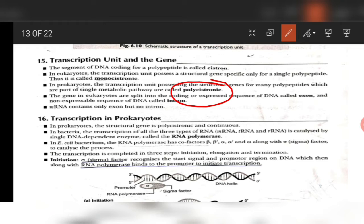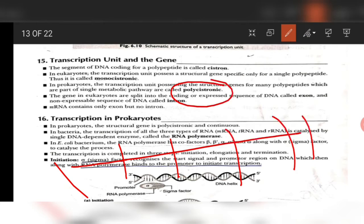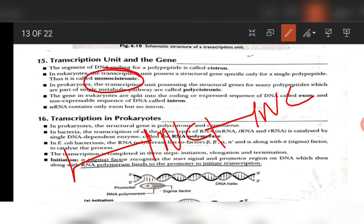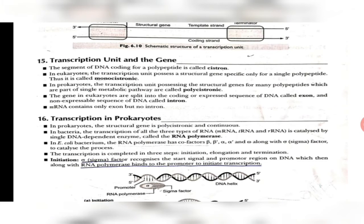In polycistronic DNA, many polypeptides can be synthesized at one time — from one stretch of mRNA, the first polypeptide, second, third, fourth — all formed together. Whereas in eukaryotes, the DNA is monocistronic, with alternating coding and non-coding regions. So transcription must happen in short segments. That is why it is monocistronic DNA — because it has non-coding regions known as introns. Coding regions are called exons and non-coding regions are known as introns.